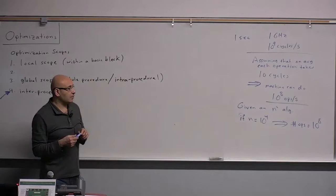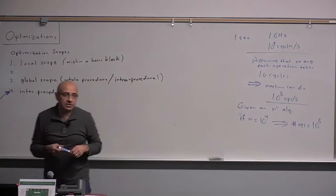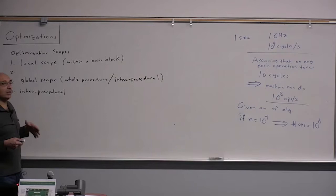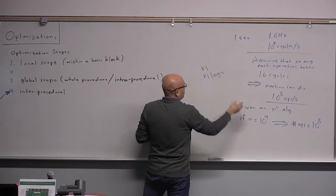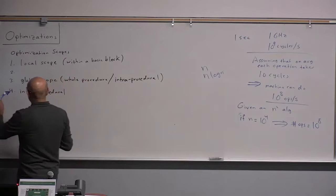N-squared algorithms are not usually appropriate for inter-procedural optimizations unless you are willing to wait a long time. For inter-procedural optimizations, we would like the algorithms to be linear or near-linear — N or N log N algorithms. N-squared algorithms are not going to process a large program within reasonable time.